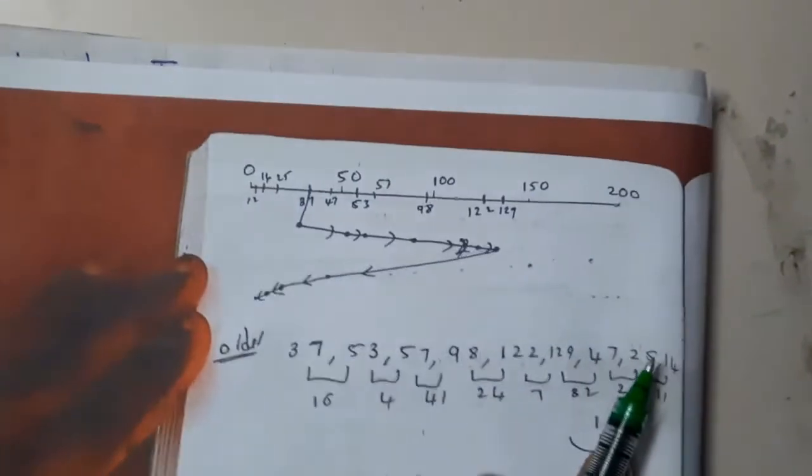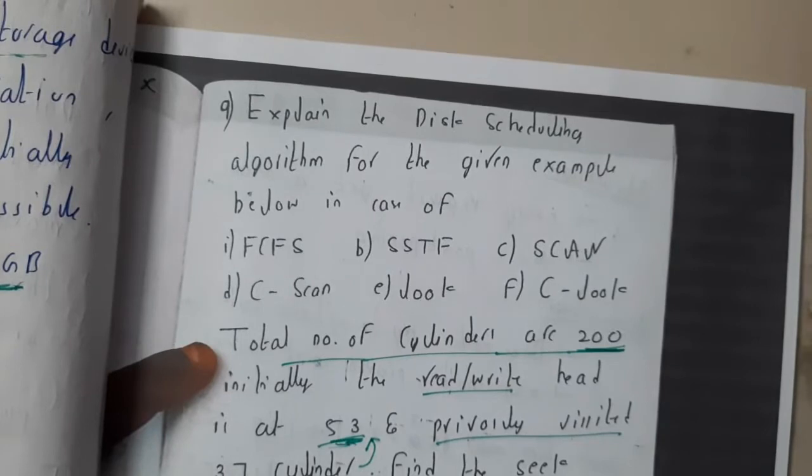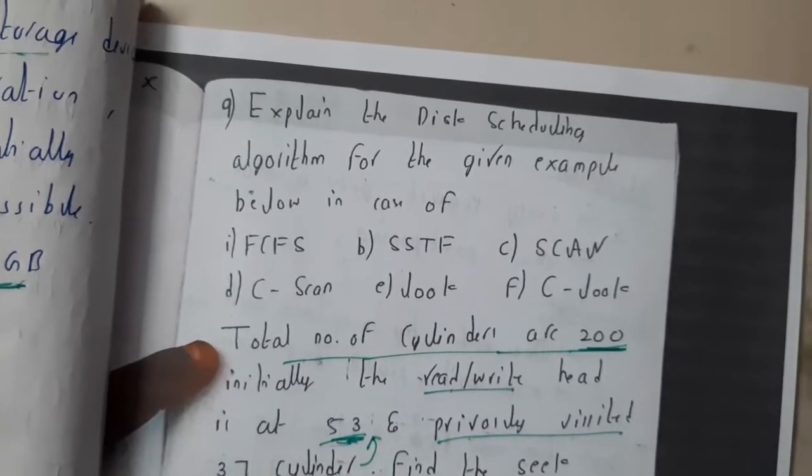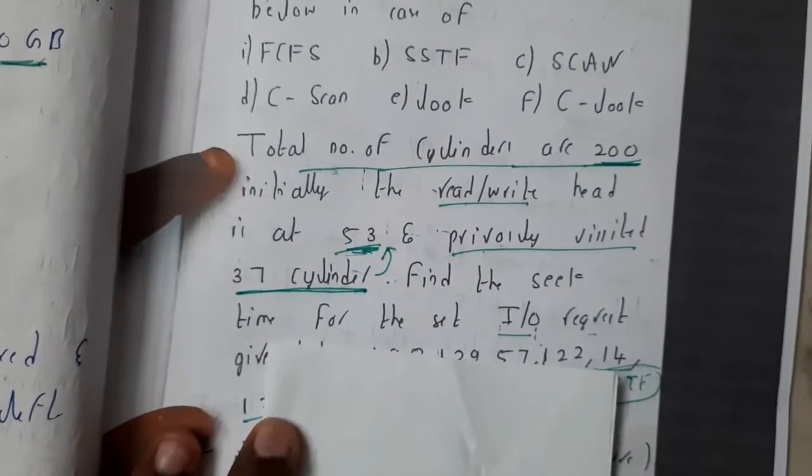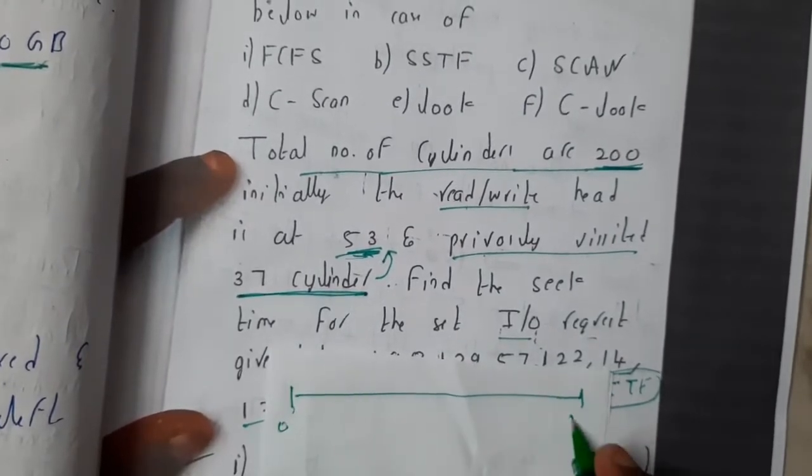Now let us go through the example so that will be clear. We are continuing with the same example from the past four videos. The initial value given is zero and the end value is 199.